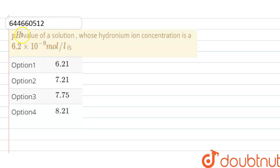Hello everyone, here the question is pH value of a solution whose hydronium ion concentration is 6.2 × 10^-9 mol/L. So here hydronium ion concentration, that means hydrogen ion concentration, is 6.2 × 10^-9 and we have to find out the value of pH.